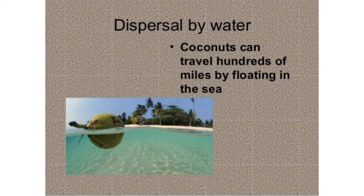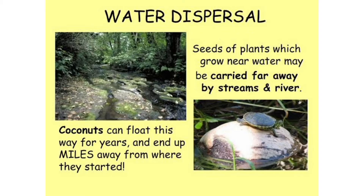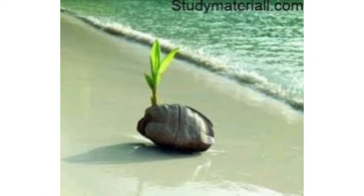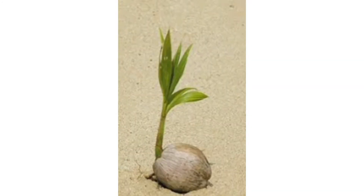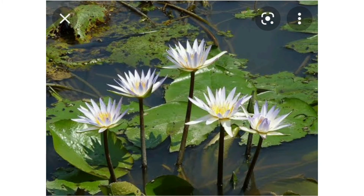Next, dispersal by water. Seeds of some plants that grow in or near water bodies are carried by water to different places. For example, coconut — it may drift for several months in the sea before reaching land. Seeds of water plants such as hydrilla, lotus, and water lily are light and spongy. Therefore, they float on the water and are carried to far away places.